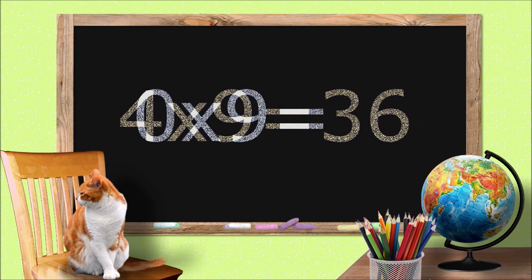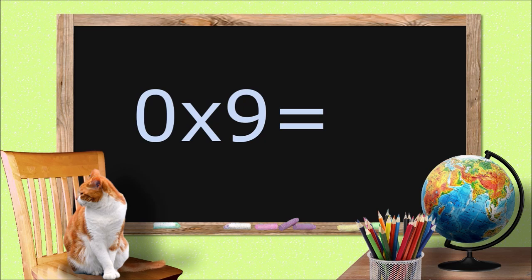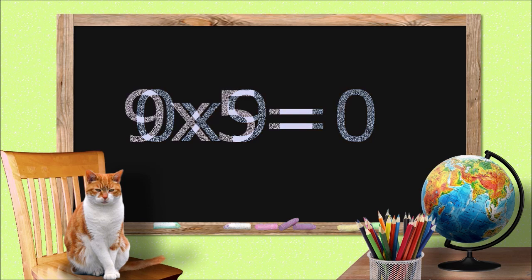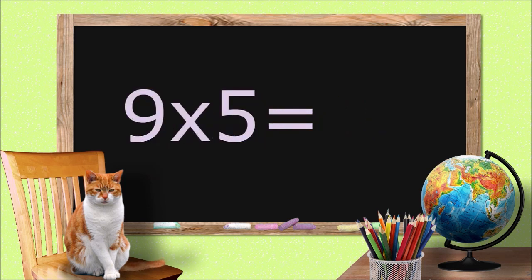0 times 9 equals 0. 9 times 5 equals 45.